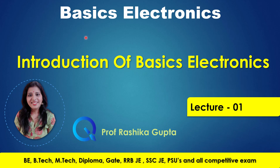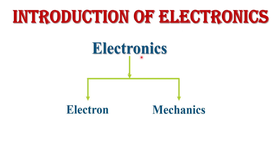Hello friends, welcome to Quick Learn Tutorial Series. In this video I will explain the introduction of basic electronics. This is lecture number one of the basic electronics series. Electronics is basically the combination of two words: electron and mechanics, which means here we study electron mechanics. The word 'electronics' is derived from 'electron mechanics', meaning we study the behavior of electrons.